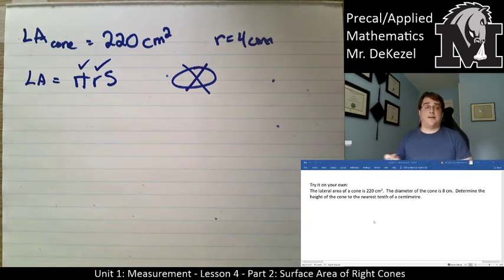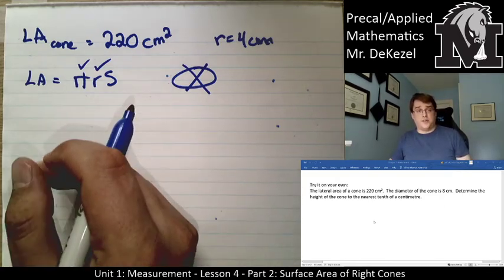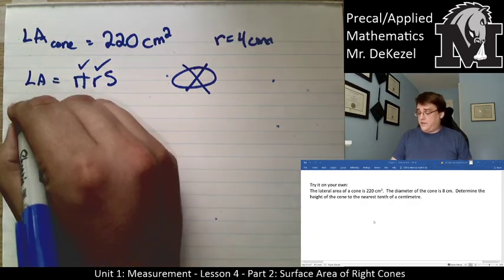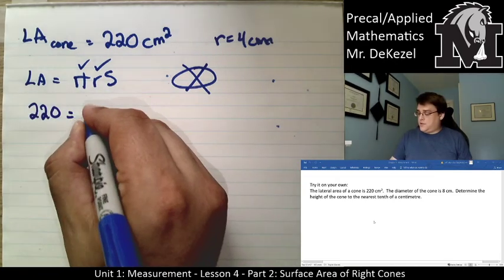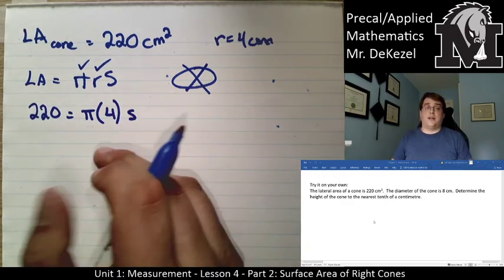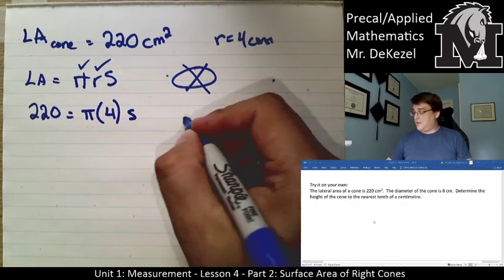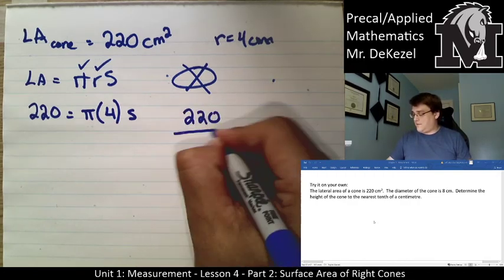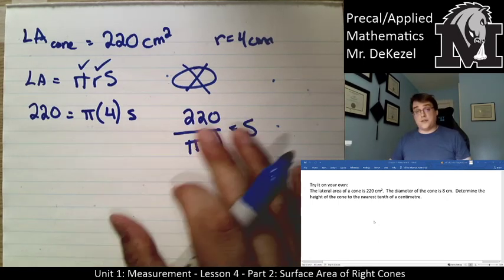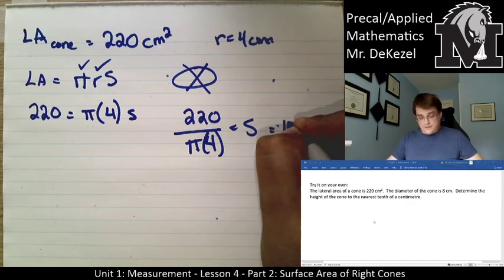Since it's simpler this time, I'll plug in numbers before rearranging. The lateral area is 220 = π × 4 × s. To isolate s, divide both sides by π × 4: s = 220 / (π × 4). Calculating that gives a slant height of 17.5 centimeters.